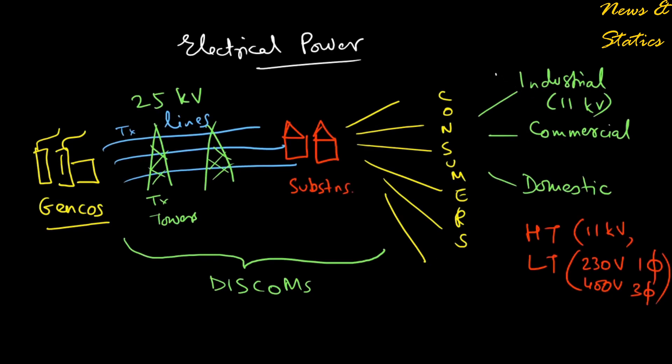Finally it is distributed to all the consumers which can be of three types: industrial consumers which usually consume high voltage power because they have their own substations, power control rooms with transformers and can step down the voltage as per their requirements. We have commercial consumers and domestic consumers.